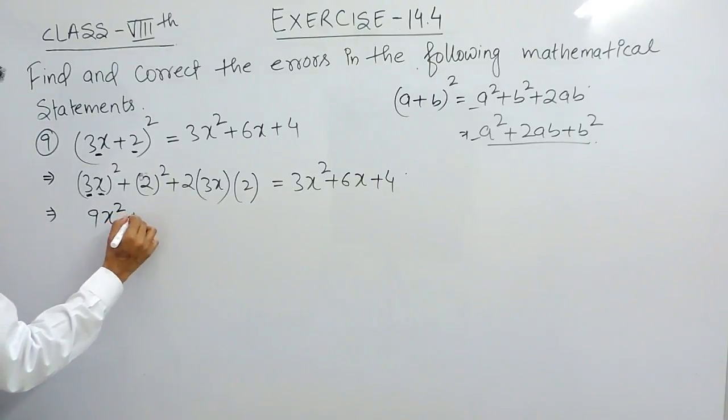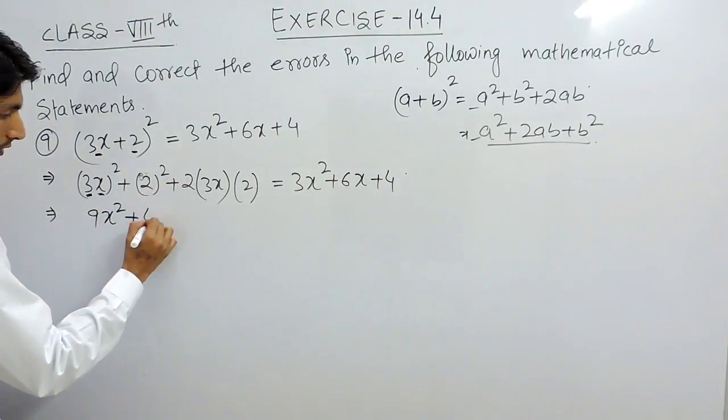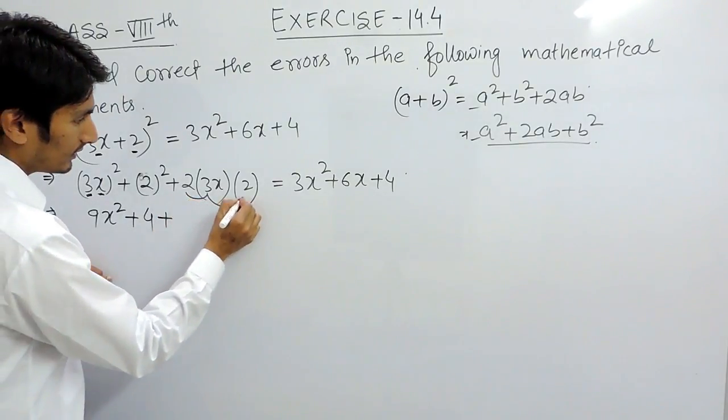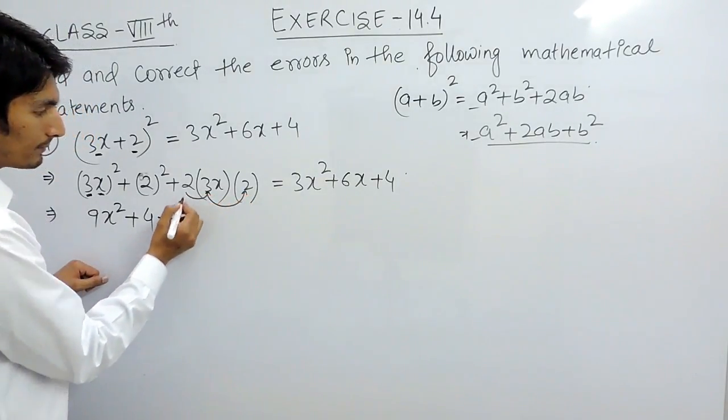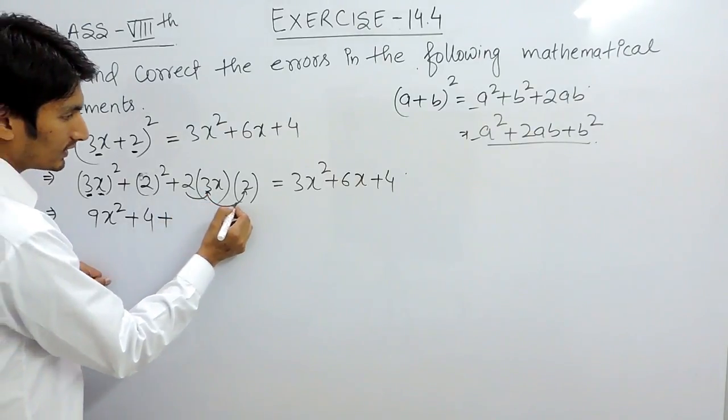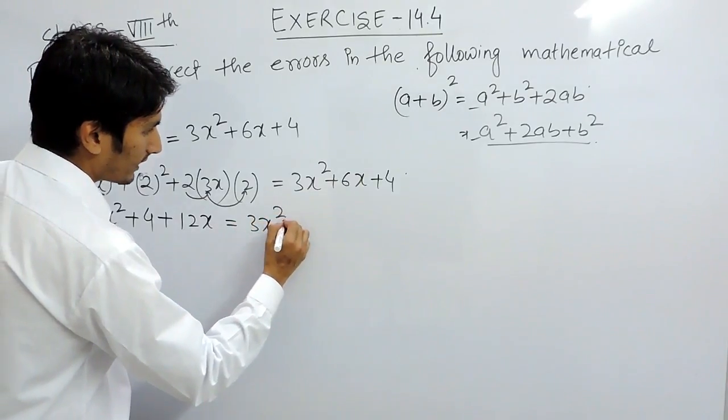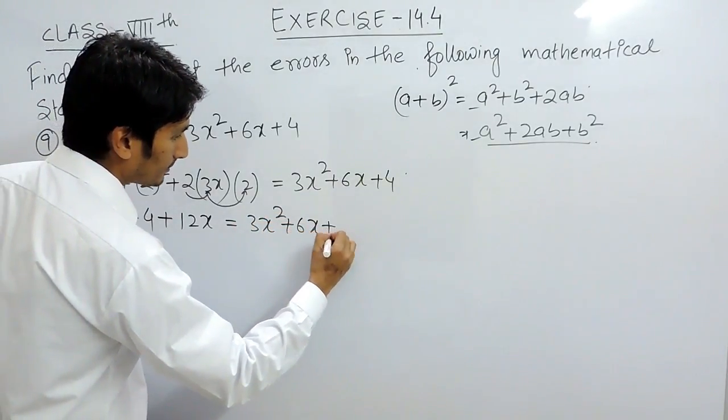And this is 4. Plus, now I have to multiply. The constant term will be multiplied: 2 times 3 is 6, into 2 is 12x. And this equals 3x² plus 6x plus 4.